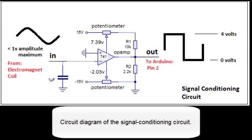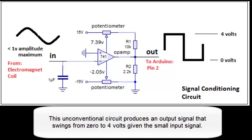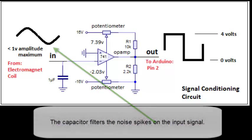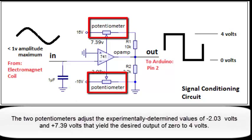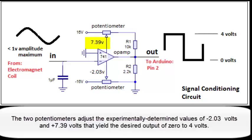The circuit diagram of the signal conditioning circuit is shown here. This unconventional circuit produces an output signal that swings from 0 to 4 volts given the small input signal. The capacitor filters the noise spikes on the input signal. The two potentiometers adjust the experimentally determined values of negative 2.03 volts and 7.39 volts that yield the desired output of 0 to 4 volts.